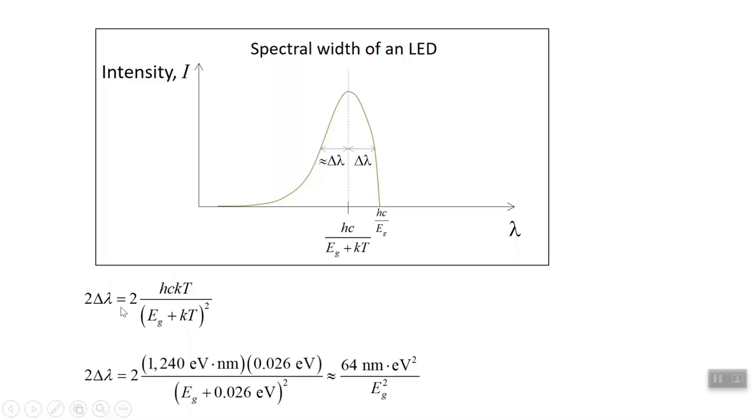Let's put in some numbers. So 1240 for hc and 0.026 for kT. I'm going to make a commonly done but questionably valid approximation, which is to ignore this 0.026 in the denominator. The reason why it's questionably valid is because E sub g, the energy gap, is typically on the order of 1 eV.